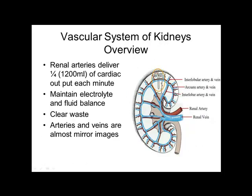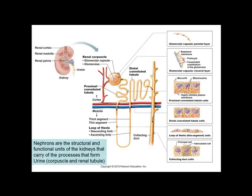The kidneys maintain the correct pH, water content, and electrolyte levels in our blood. Every four minutes all the blood in your body is filtered. We reabsorb 99.9% of the plasma that gets filtered — if we didn't, you would dehydrate and be urinating constantly.